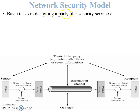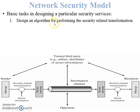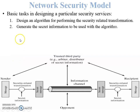The basic tasks in designing a security service are: first, design an algorithm for performing the security-related transformation — a message and secret information are input into a process that adds the secret information. Second, generate the secret information to be used with the algorithm. In an encryption algorithm, the message and secret information are the inputs, and the output is the secure message or ciphertext.